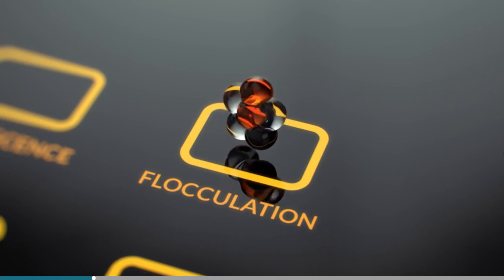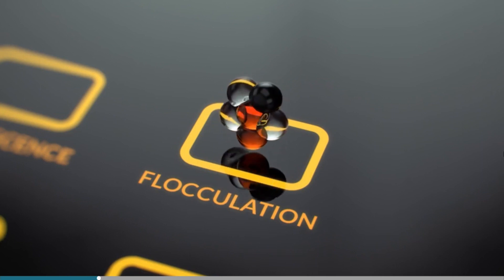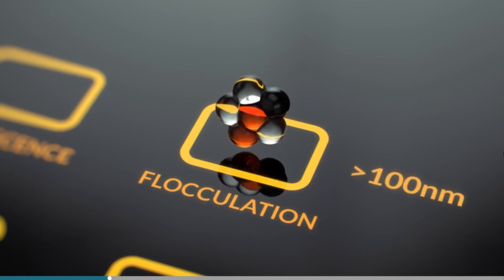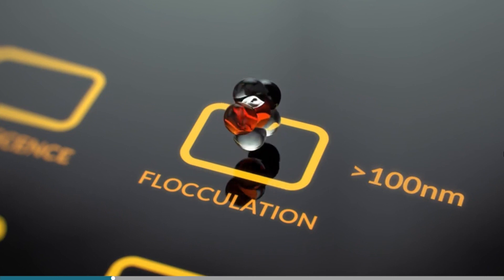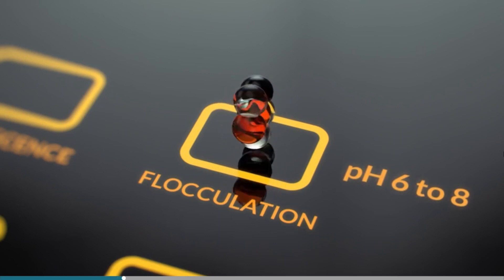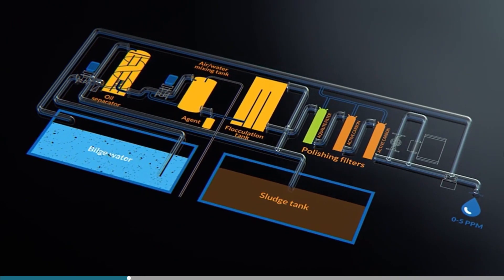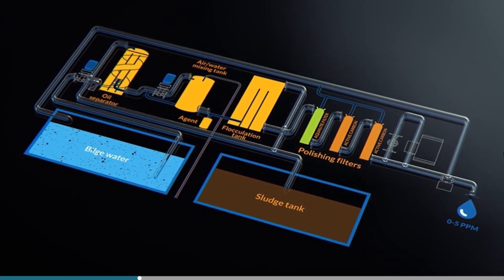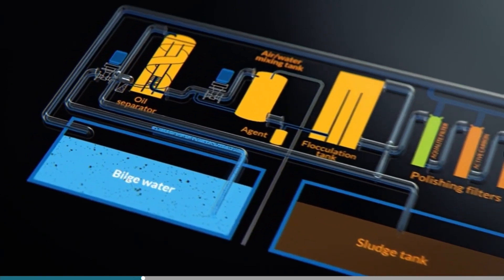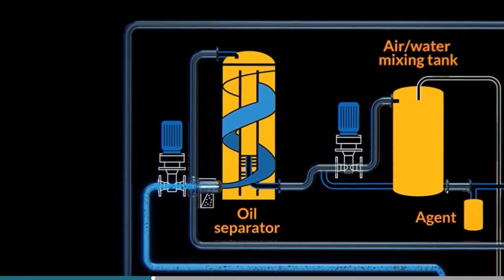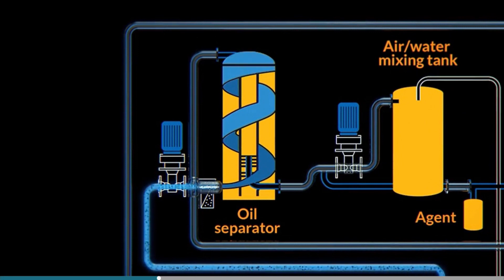Particles are then bound together through chemical action. This process will form particles larger than 100 nanometers, and these particles, called flocks, will then be able to settle. This works best at a pH of between 6 and 8. Bilge water from the bilge tank is fed to the first stage via a filter. In the oil separator, the bilge water circulates upwards around the periphery of the separator. The change of direction and drag helps to separate the oil from the water.